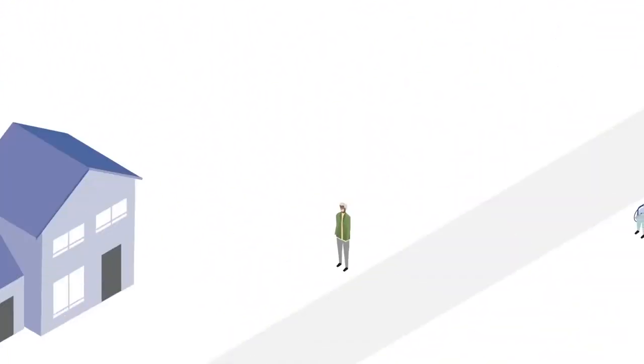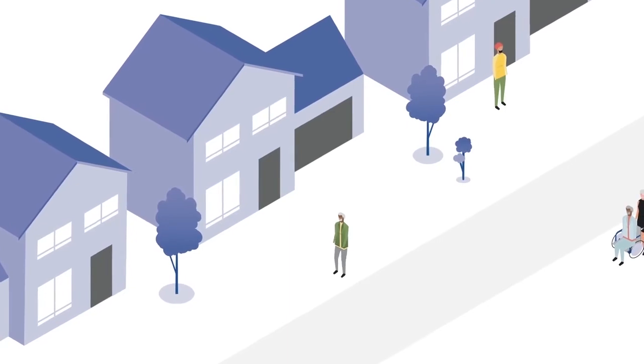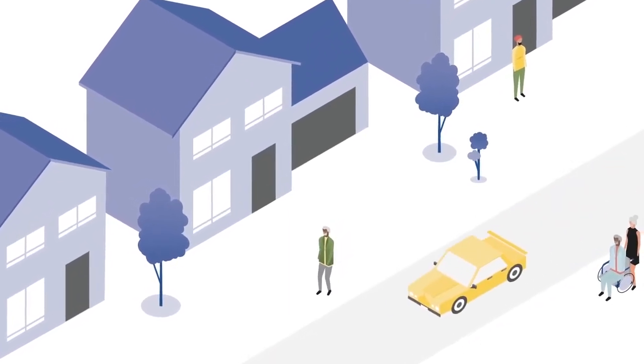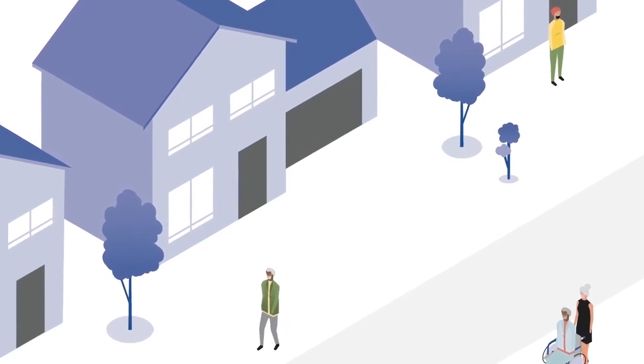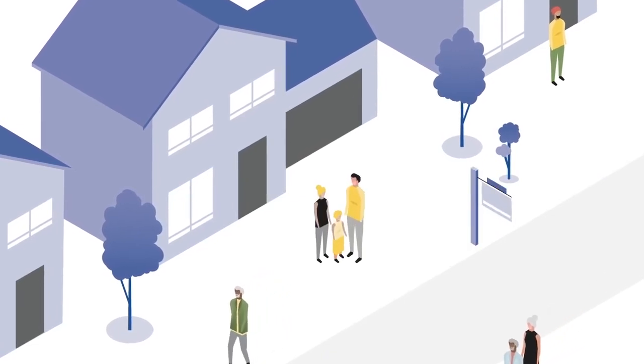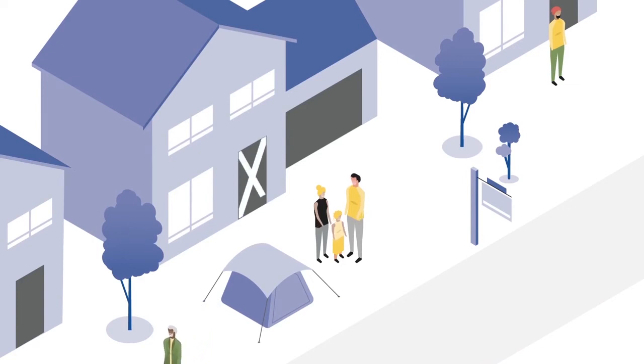Today, this non-public, non-private space includes undocumented immigrants, ex-offenders, the homeless, and extremely poor, and many more. These people not only lack access to public or private space, but too often we don't see them as part of we the people.